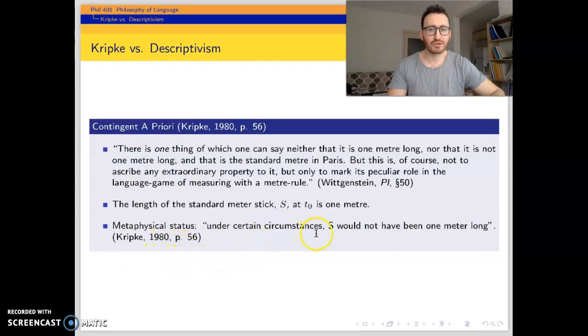Metaphysically, under certain circumstances, S, the object S, would not have been one meter long. So there is this possibility. Then it is a contingent claim. It's not necessary.